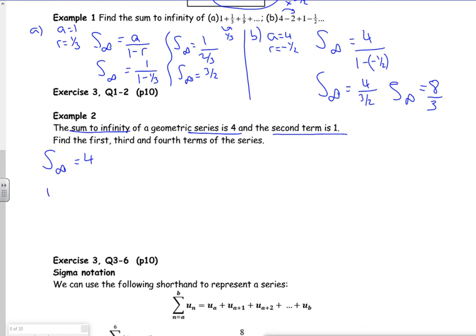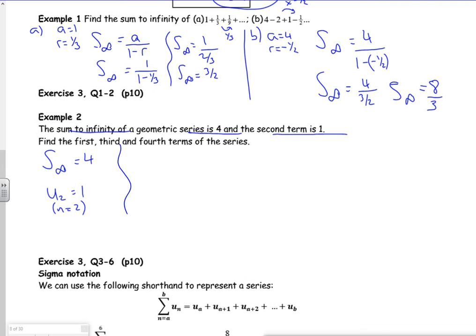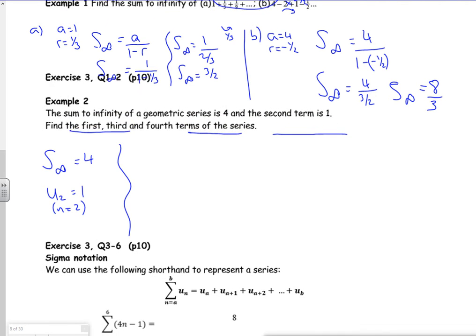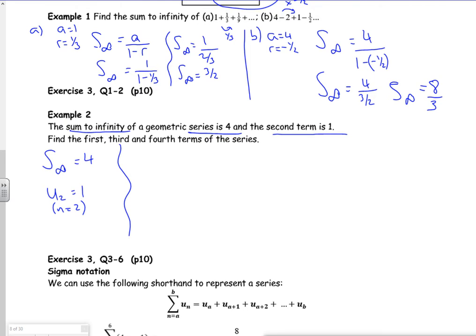The second term, so u2 is one. So n is two. Right, now then, I need to use both these pieces of information. So let's have a look. So I know, with that first information, I know that four is a over one minus r. With this second piece of information, I know that because it's a r to the n minus one, that one is a r to the two minus one. So one is a r.